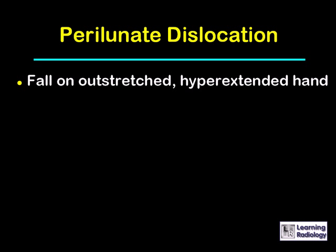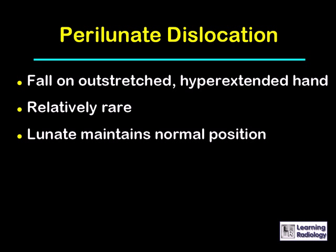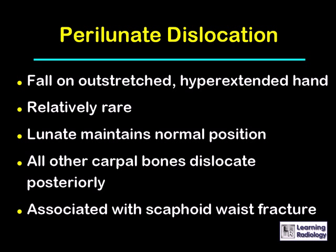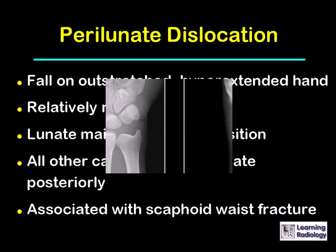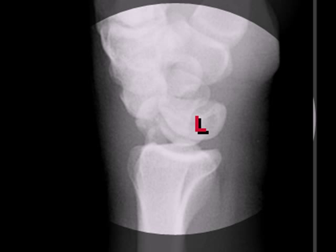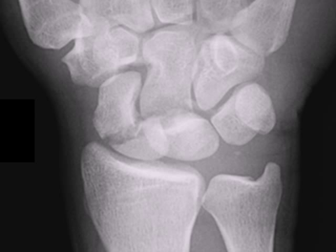Perilunate dislocations occur because of a fall on an outstretched, hyperextended hand. They are relatively rare. In a perilunate dislocation, the lunate maintains its normal position but all of the other carpal bones dislocate posteriorly. They are also associated with fractures of the waist of the scaphoid. On the lateral view, the lunate maintains its normal relationship with the distal radius but the remainder of the carpal bones are dislocated posteriorly. A fracture through the waist of the scaphoid on the frontal view makes this a trans-scaphoid perilunate dislocation.